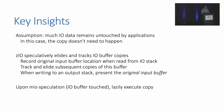Zeo is built on the assumption that much I/O data remains untouched by applications — in this case, the copy doesn't need to happen, but it is still useful for developers to have this copy. To eliminate this, Zeo speculatively elides these copies and tracks I/O buffer locations. Zeo records original input buffers when they come in from an I/O stack, then tracks and removes copies of that data in future buffers. When the data is eventually written to an output I/O stack, we can reuse the original input buffer instead of the intermediate unmapped buffer.